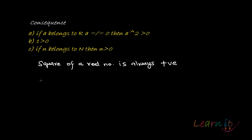Now, there are two possibilities since a is not equal to zero. Either a will be positive, belonging to the set of positive real numbers, or if a is negative, then minus of a will belong to the set of positive real numbers. So we have two possibilities here.